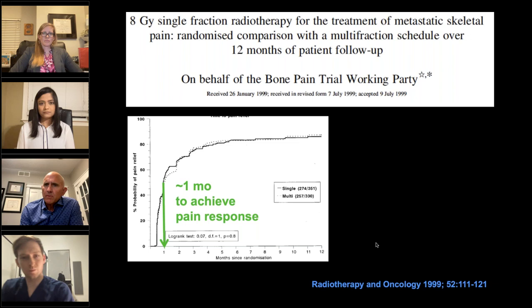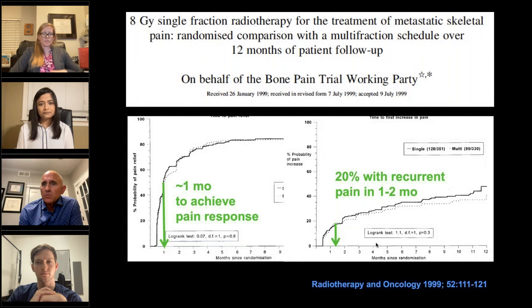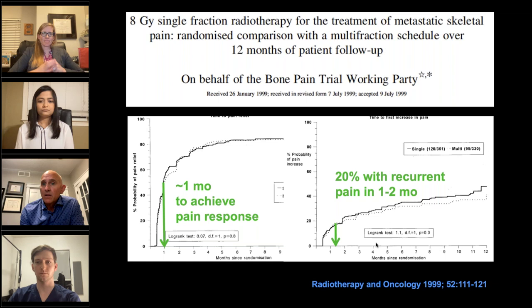MSK ablation really started around 2005, beginning with the treatment of patients with painful metastases — because SBRT and other radiation therapies work for many patients, but unfortunately many have recurrent disease and it often takes a long time for disease to respond. For example, 50% of patients won't have a pain response until over a month, and of those that do respond, 20% will have recurrent pain within one to two months. That's when we started treating patients with ablation.